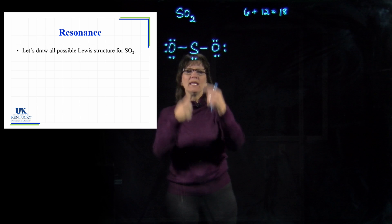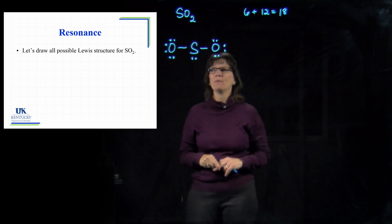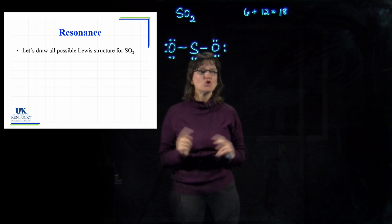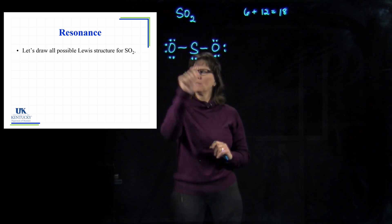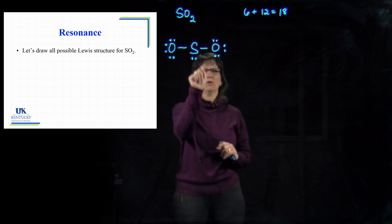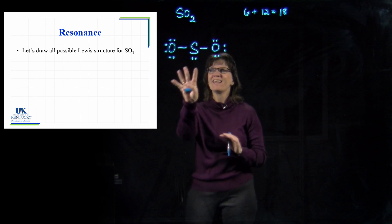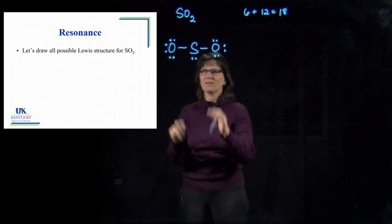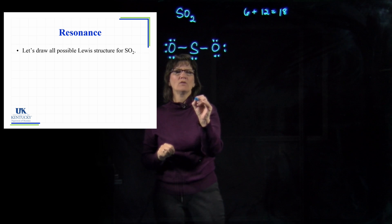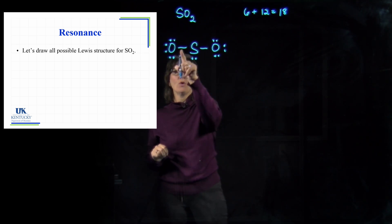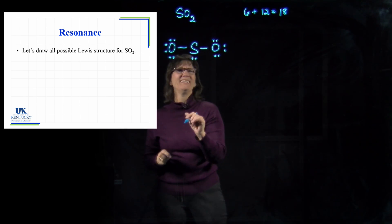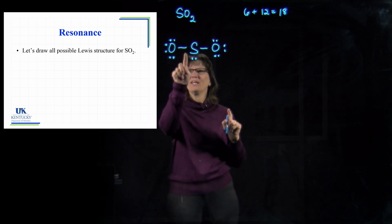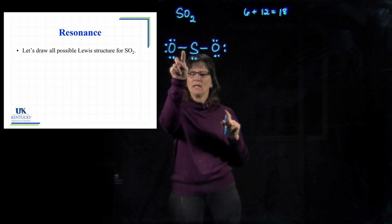We always shift electrons from the outside in until we can make everybody happy. Sulfur only needs two more electrons. So we could choose to shift from the left-hand oxygen in, or from the right-hand oxygen in. You always shift from the terminal atom inward.